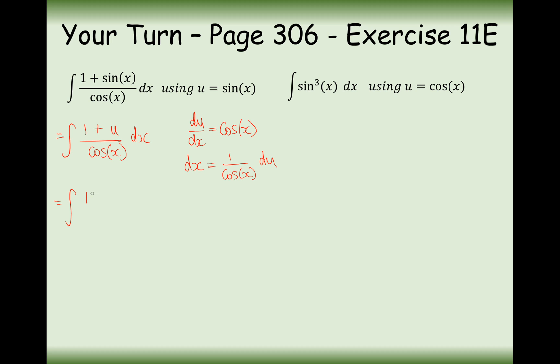In this case here, it's going to be 1 plus u over cos squared x, because we've got two multiples of cos on the bottom, times du. Now, what we can do is we can change cos squared into 1 minus sine squared.